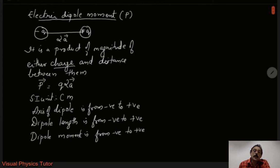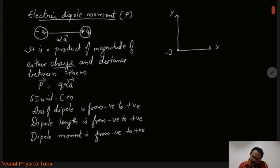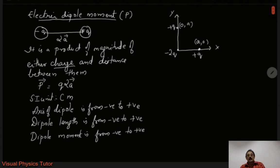Having learned this, let us solve a simple problem. Assume we have an XY plane with an X-axis and a Y-axis. At the origin there is a charge of minus 2Q. Along the X direction at coordinate (A, 0) there is a positive charge, and along the Y-axis at coordinate (0, A) there is another positive charge. We are asked to find the net electric dipole moment of this system.